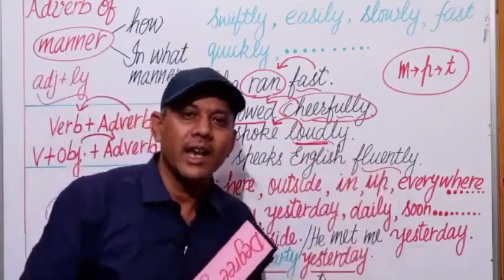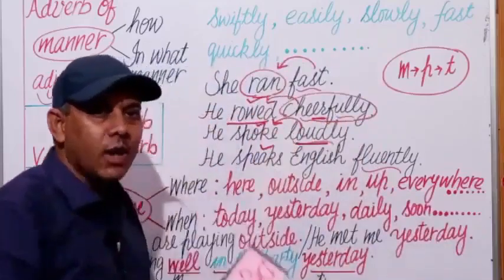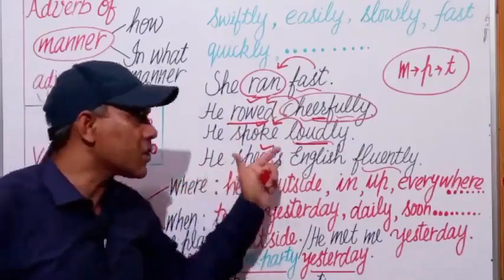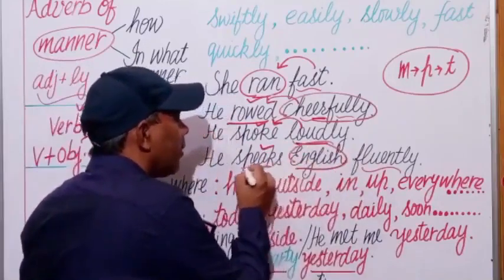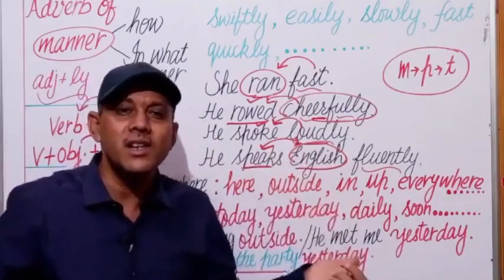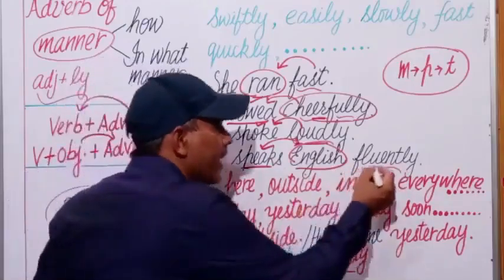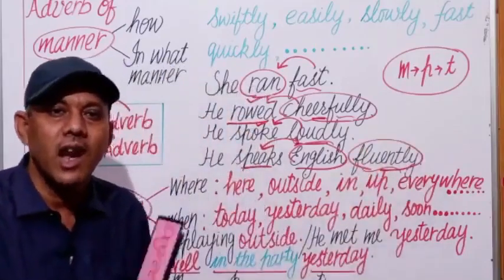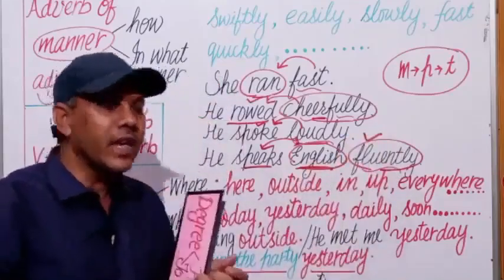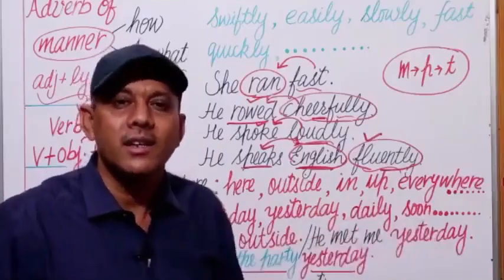'He speaks English fluently.' In this sentence, there is an object — 'English' — after the verb 'speaks.' So the adverb 'fluently' is placed after the object. How does he speak English? Fluently — in a fluent manner. The word 'fluently' tells us the manner of action, but it comes after the object. So we can use adverb of manner either after the verb, or after the object of the verb if one is present.